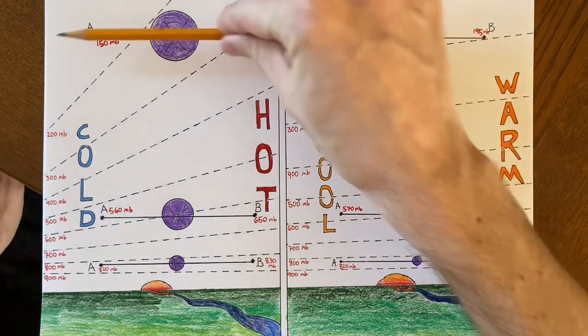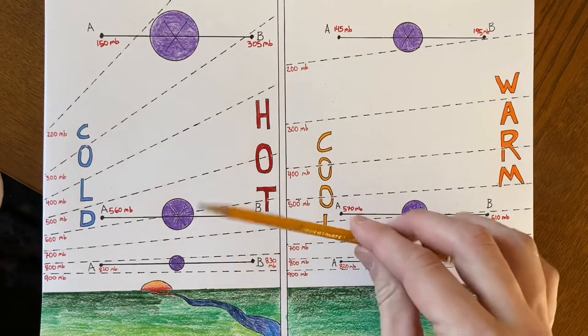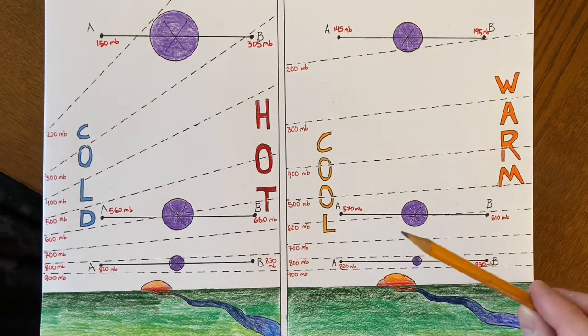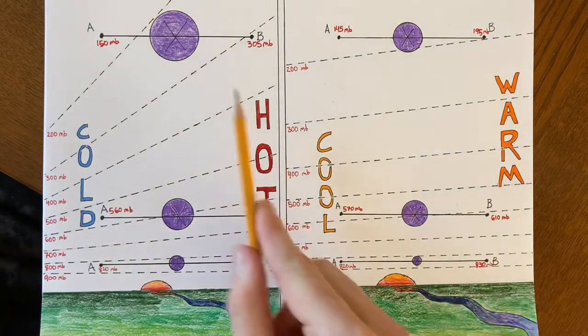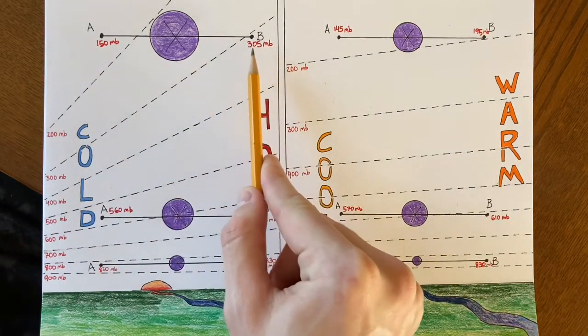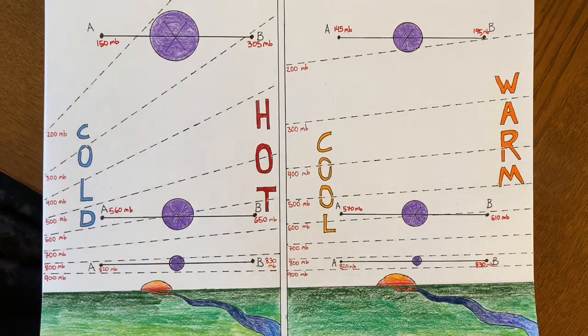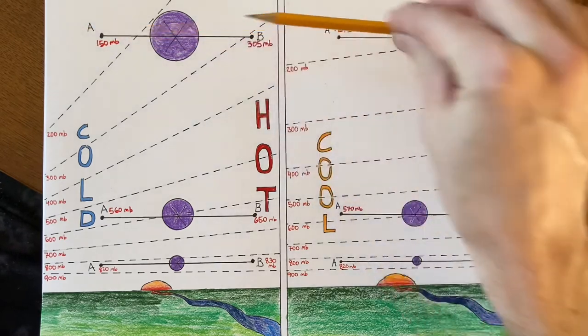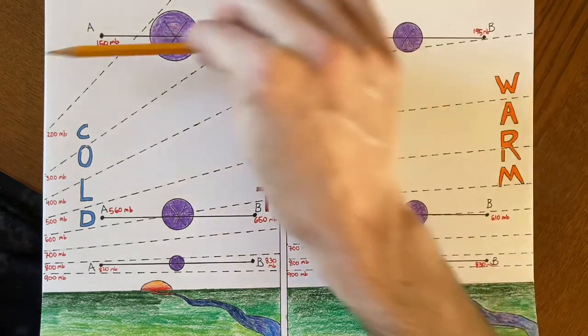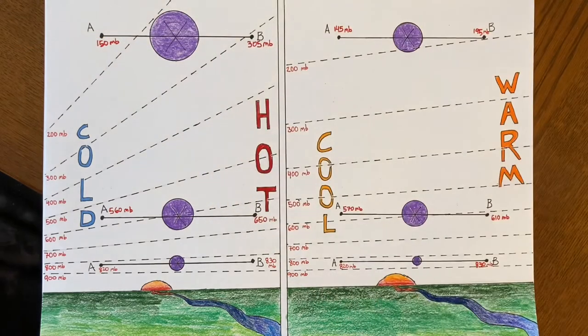What about way up here? Well, at this point, the sloping of the pressure lines has become pretty significant. So there's a pretty significant pressure difference from A to B. B is about 305 millibars. A is 150 millibars. So that is 155 millibar difference between A and B, much bigger than it was at lower altitude. So we're going to have much stronger winds up here because there's a much larger pressure difference over the same horizontal distance from B to A.